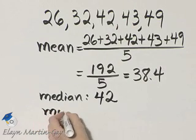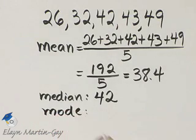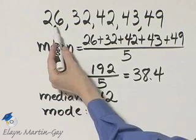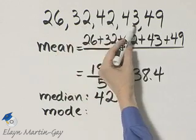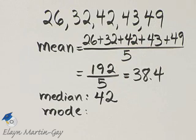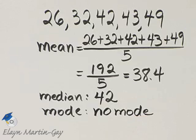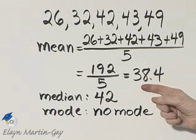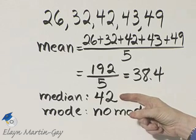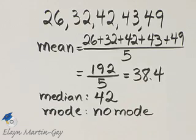And what's the mode? The mode is the number that occurs most often. Notice each of these numbers occurs simply once, so we have no mode for this list of data. The mean is 38.4, the median is 42, and we have no mode.